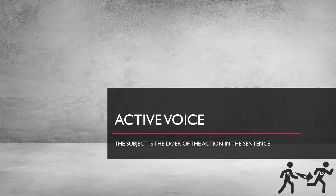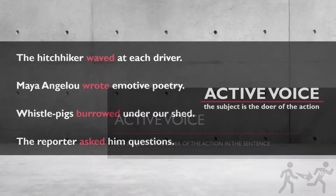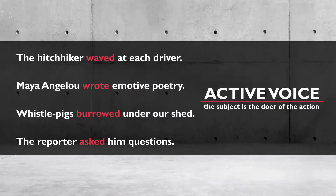Remember, active voice is when the subject is the doer of the action in the sentence. Sentences are said to be in active voice when the subject is the doer of the action. Consider these examples: the hitchhiker waved at each driver; Maya Angelou wrote emotive poetry; whistlepigs burrowed under our shed; the reporter asked him questions.